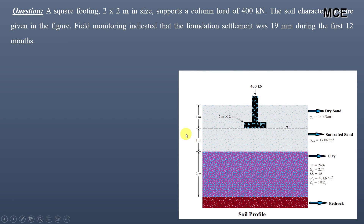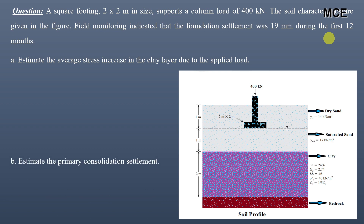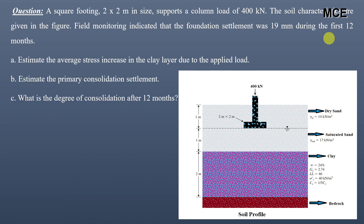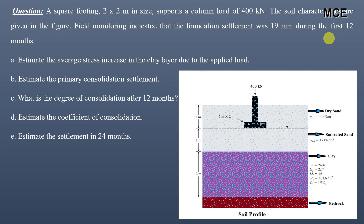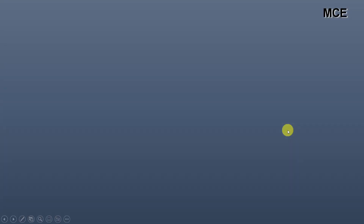A question is given: a square footing 2×2 meters supports a column load of 400 kilonewtons. The soil characteristics are given in the figure. Field monitoring indicated that the foundation settlement was 19 mm during the first 12 months. We need to find the average stress increase in the clay layer, primary consolidation settlement, degree of consolidation after 12 months, coefficient of consolidation, and settlement in 24 months. The soil profile shows dry sand, then saturated sand for one meter, then a clay layer for two meters, and finally bedrock. The water table is at a depth of one meter.